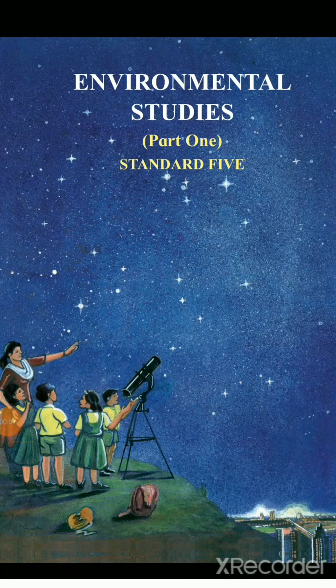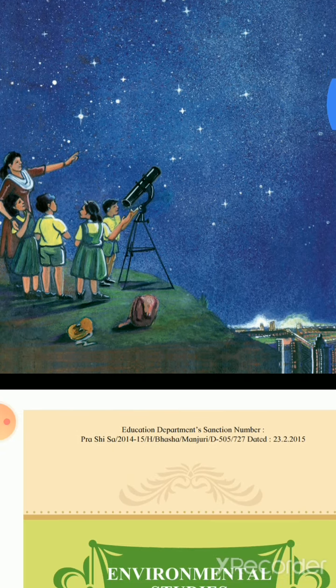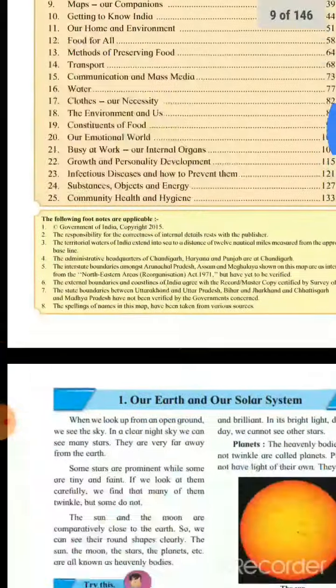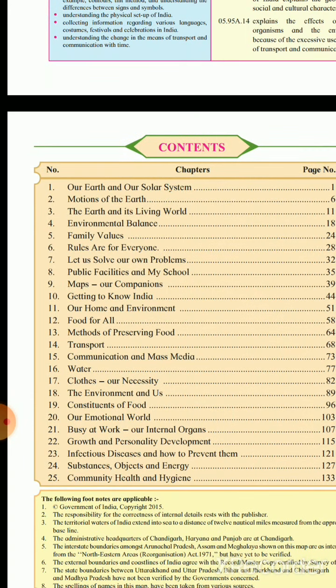Dear students, this is our Environmental Studies Part 1, EVS 1, for Standard 5. There are 25 chapters. Our Earth and Our Solar System is our first lesson. These lessons belong to the field of science and also geography. Let us start the first lesson: Our Earth and Our Solar System.